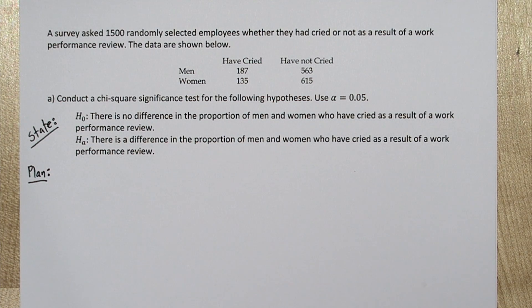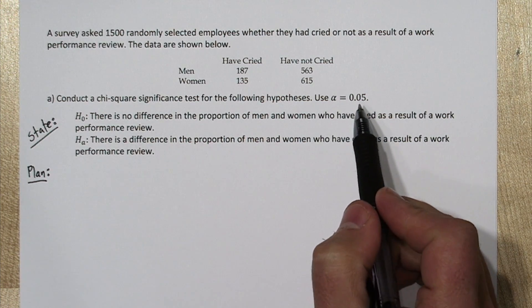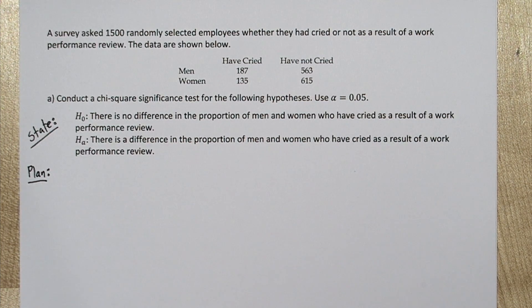Since we're doing a chi-square test, let's use the four-step process. So the state steps already taken care of. We have our significance level, alpha equals 0.05, and our hypotheses. Now if conditions are met, we will use a chi-square test for homogeneity.